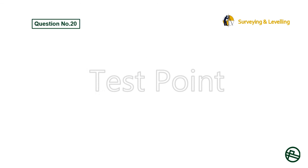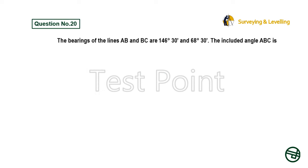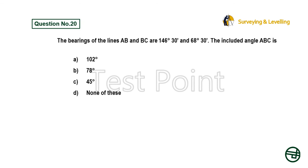Question 20: The bearings of the lines AB and BC are 146°30' and 68°30'. The included angle ABC is — Option A: 102°. Option B: 78°. Option C: 45°. Option D: None of these. Answer is Option A: 102°.